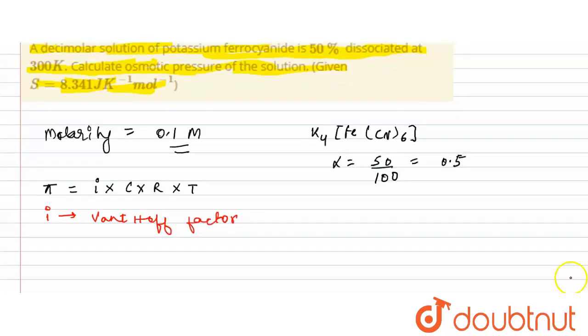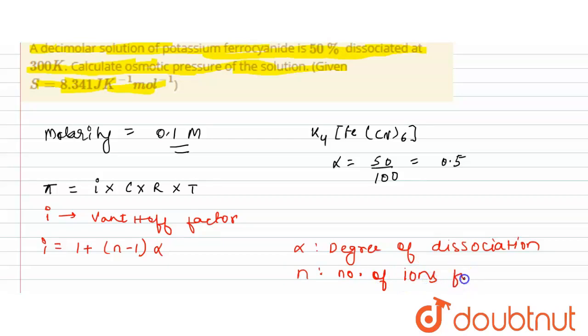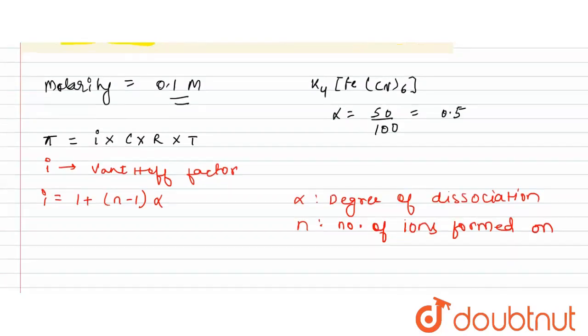And in case of dissociation, i is given by 1 plus (n minus 1) times alpha, where alpha is degree of dissociation. And what is n? So n is number of ions formed on dissociation.